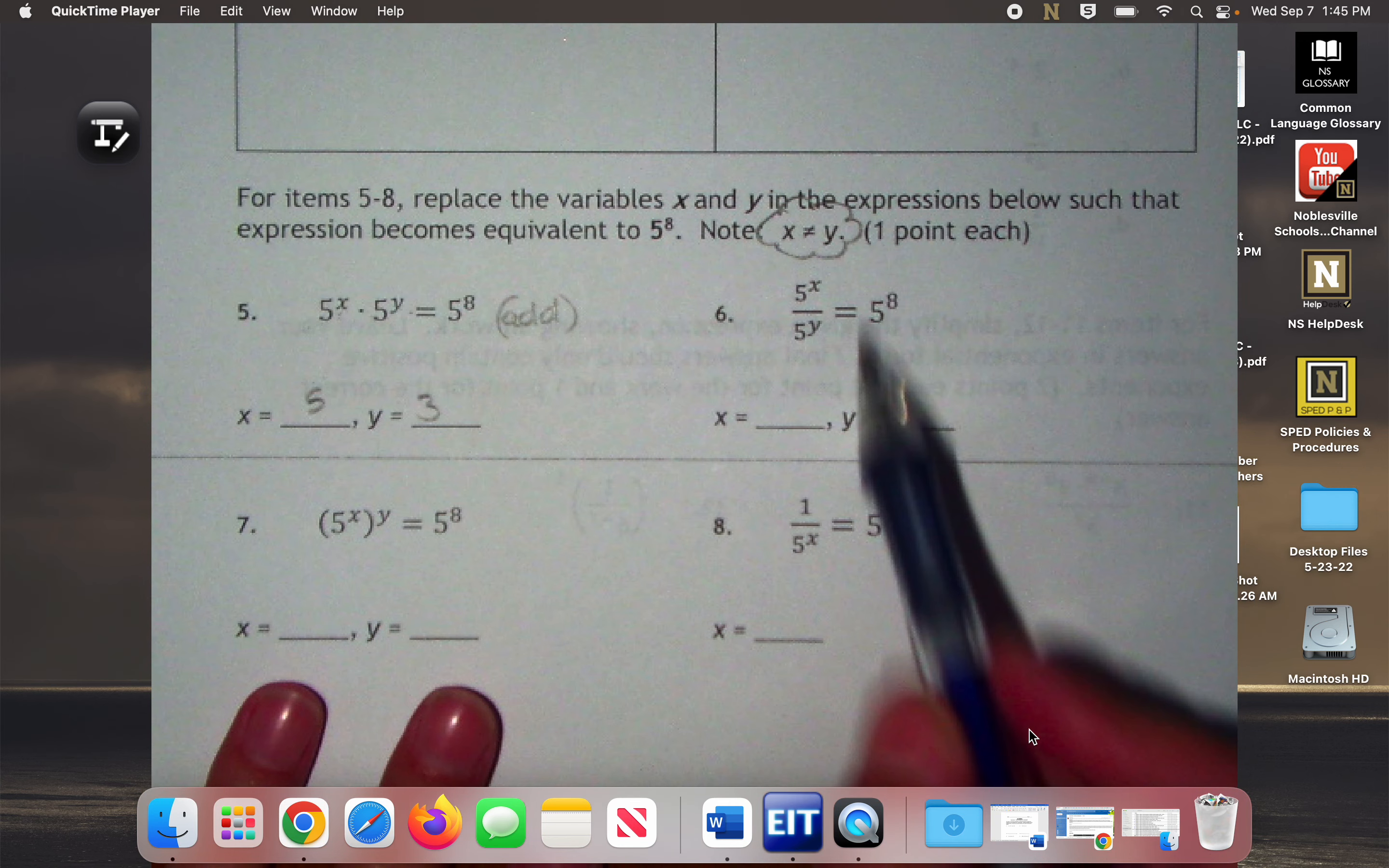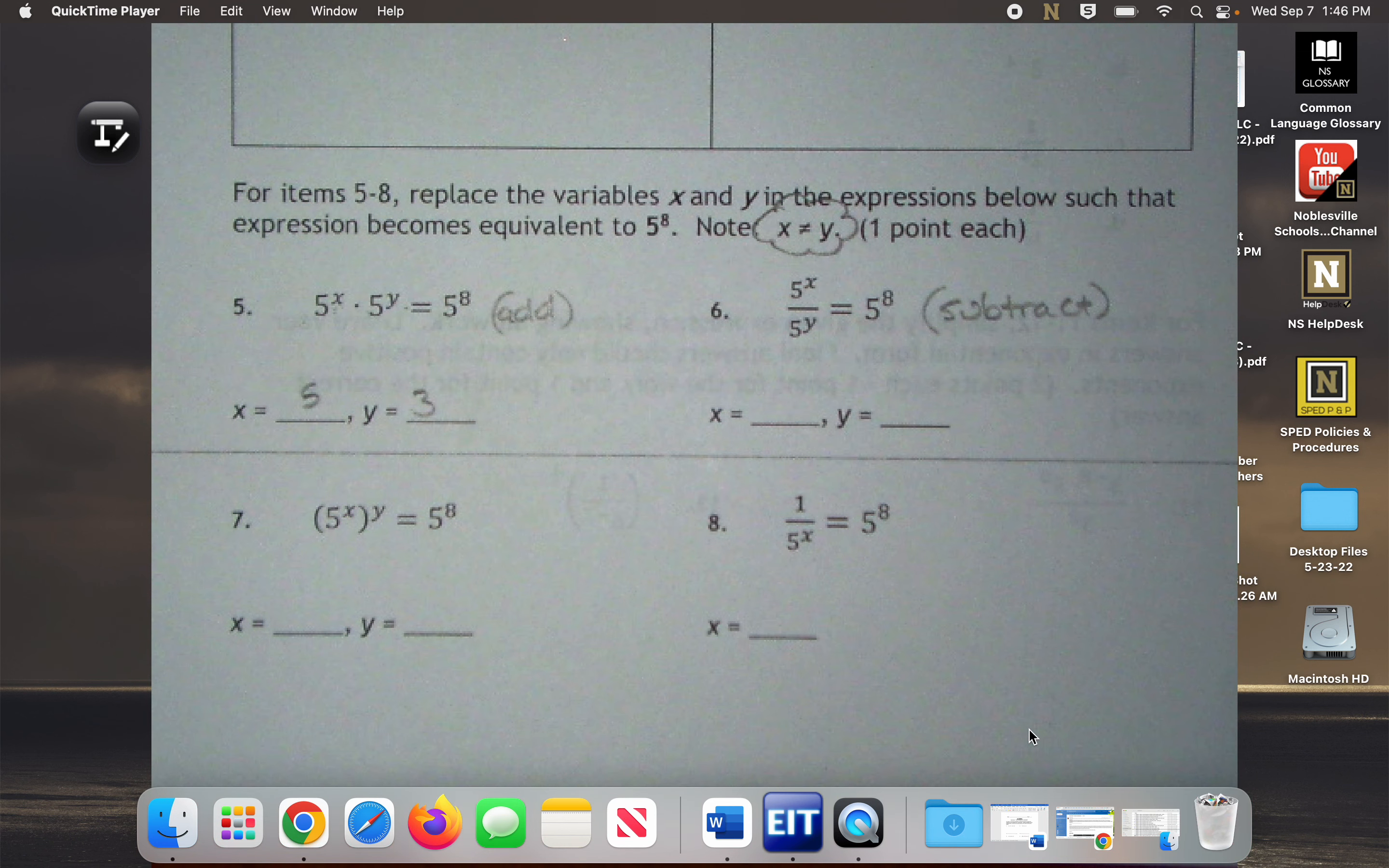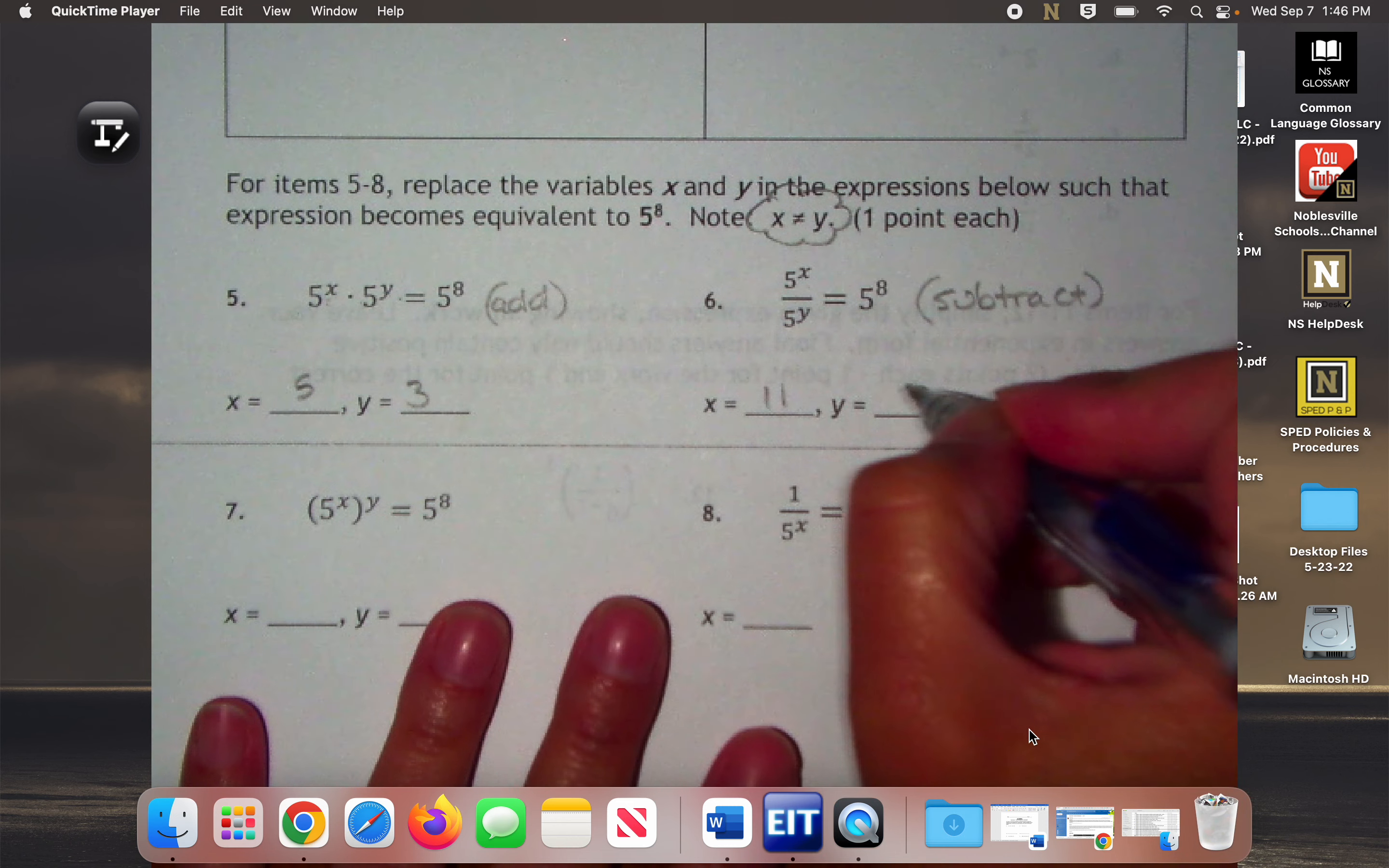I'm going to add them up and I'm going to get 8. So you can get creative. You can keep it simple. I will know right away if your values work. Again, they cannot be the same. All right, so how about number 6? This is the quotient rule. So what am I going to do here with this X and Y to make 5 to the 8? Subtract. So what could X and Y be? Now keep in mind, you have to subtract the numerator minus the denominator. You can't mix-match it. 12 and 4, 16 and 8, 10 and 2, 11 and 3.